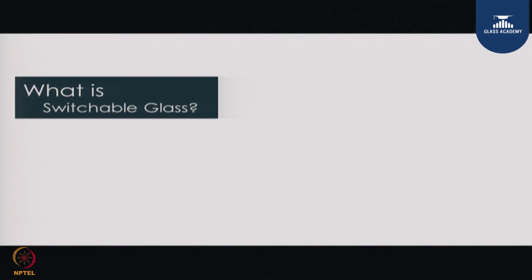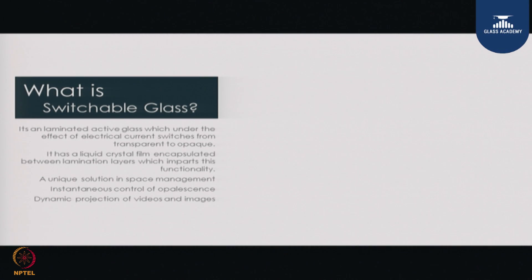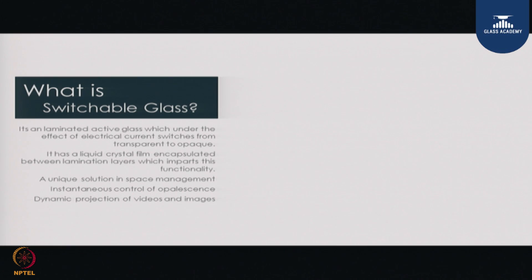As a generic product name it is called switchable glass. Switchable glass is an active laminated glass which, under the effect of electrical current, switches from transparent to opaque. It is a liquid crystal film encapsulated between lamination layers, and it is a unique solution to instantaneously control the opacity through the glass — essentially creating an on and off situation.